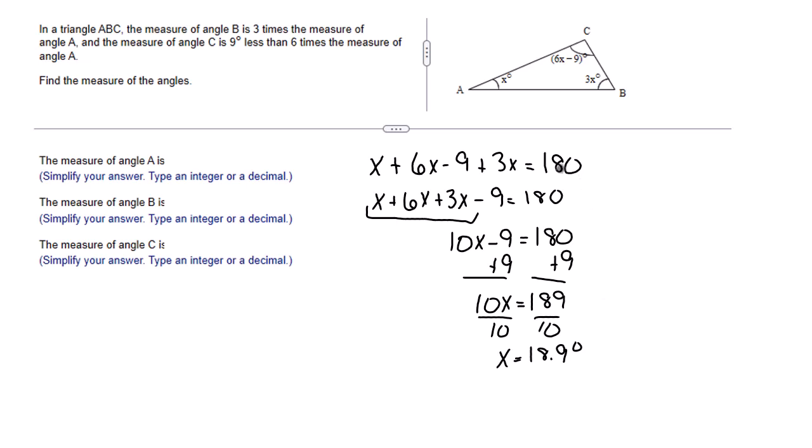Now let's look back at our triangle. X is 18.9 degrees. But what about this angle? This angle is six X minus nine.